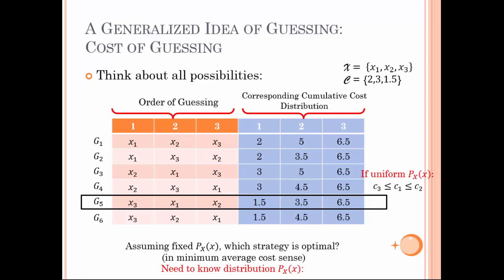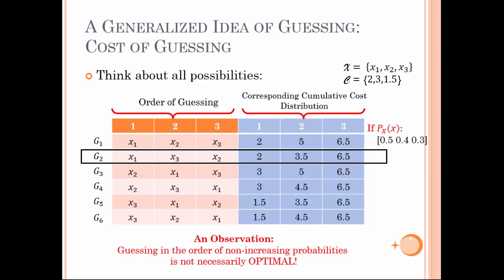Note that in that case, permuting the costs in non-decreasing order would give the minimum average guessing cost. On the other hand, let us assume a non-uniform distribution — for instance, as shown on the right — with probabilities 0.5, 0.4, and 0.3, with the same cost distribution C. In that case, it turns out that the strategy G2 instead gives the minimum average guessing cost, which is 4.65. We immediately realize that this choice of guessing is not in the order of non-increasing probabilities, which was the optimal strategy with the standard guesswork. Moreover, if we adopt that strategy G1, then we would have an average guessing cost of 4.95 instead.